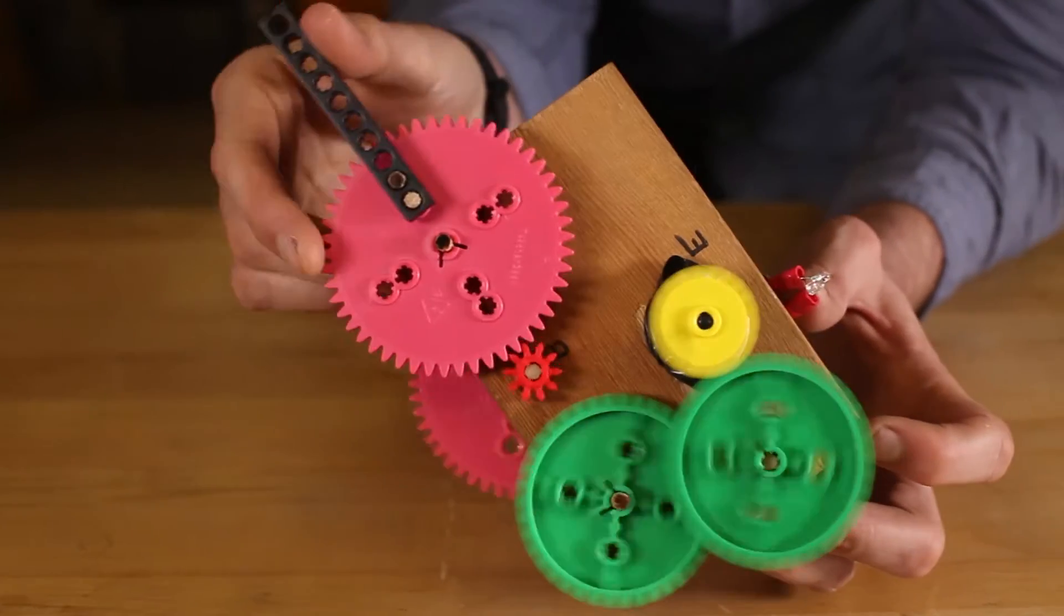Yeah, so a dynamo is just going to be this motor running in reverse, but if I spin this motor really fast, you can see that the light blinks on, but we want to be able to keep it on by turning it a lot more smoothly, so we're going to have to make a gear system to make it turn.